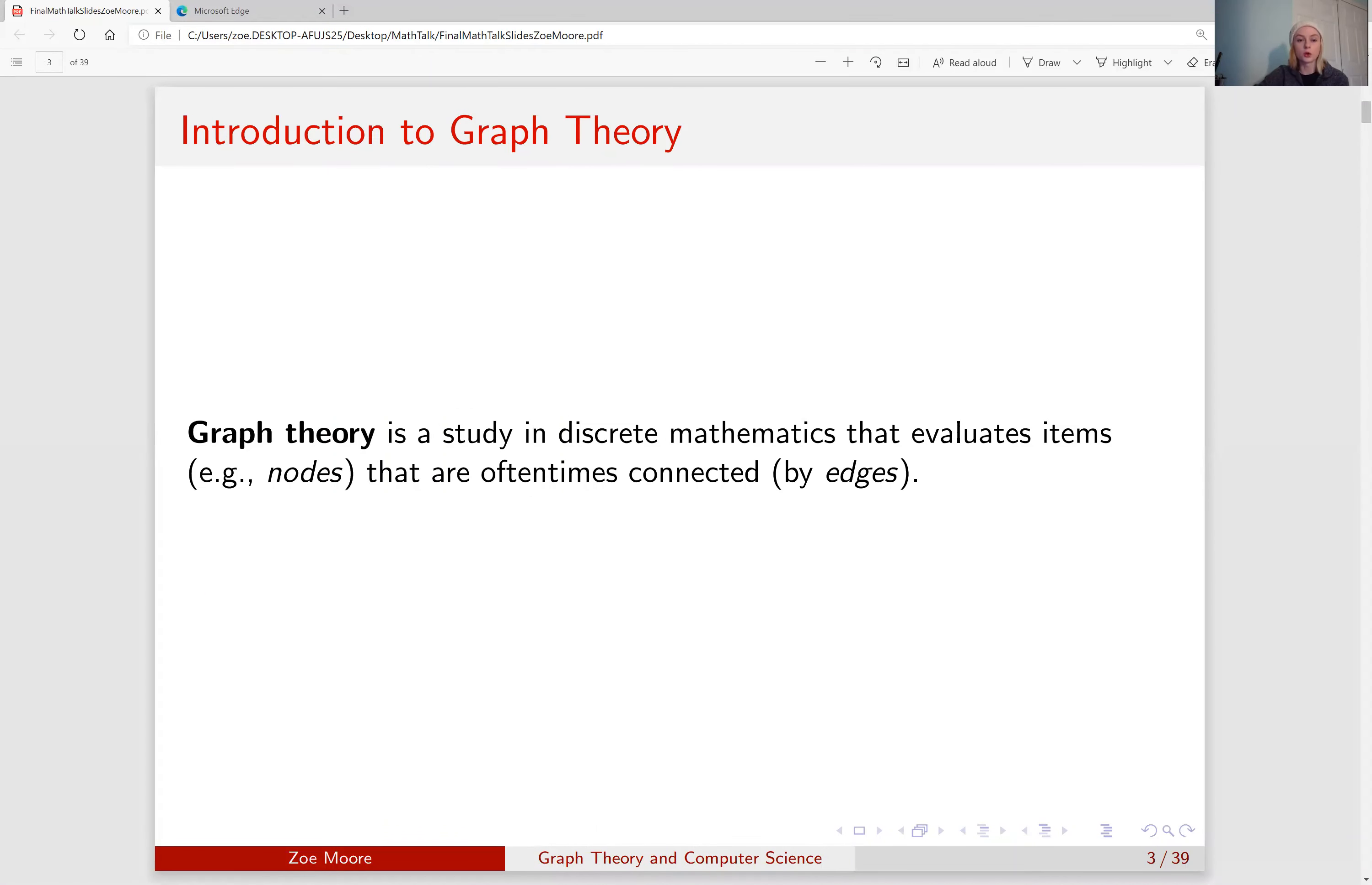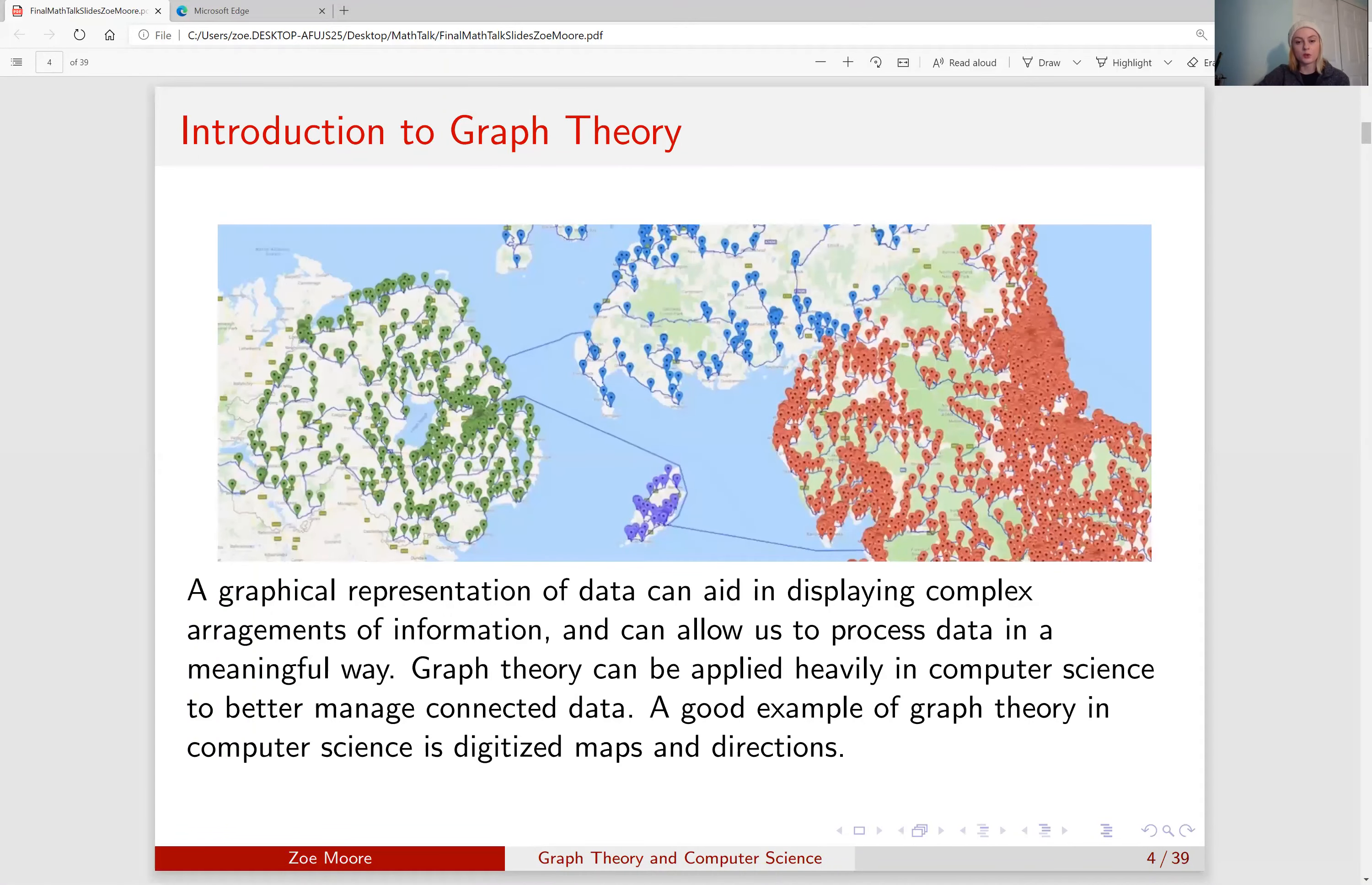To start out, graph theory is a study in discrete mathematics that evaluates items, which we will find out are called nodes, that are oftentimes connected by things we will be calling edges. Graph theory is useful in that it represents data in a way that can aid displaying complex arrangements of information and allow us to process data in a meaningful way.